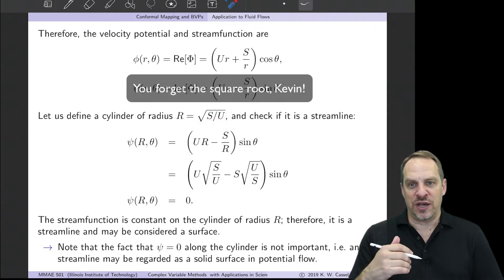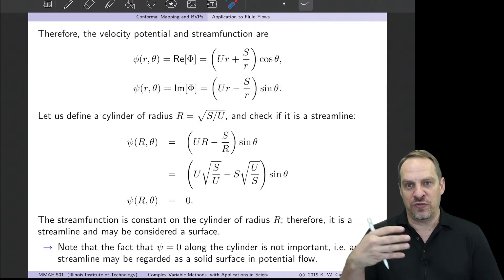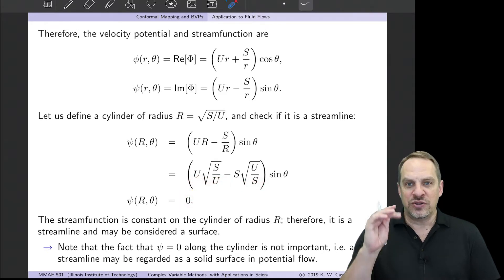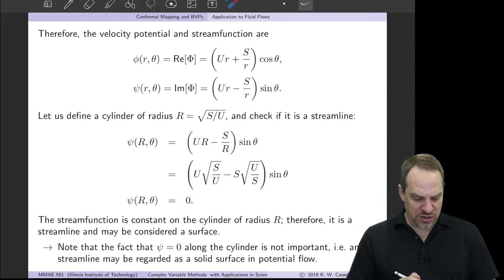So we have U times √(S/U) minus S times √(U/S), because it's 1 over R. Well, the square root of U cancels here, the square root of S cancels here, and you have √(S·U) minus √(S·U). That's just equal to zero. So on a circular cylinder of radius R, which equals √(S/U), the stream function ψ equals zero. Now it's actually not important that the value be zero, it just has to be a constant. It happens to be zero in this case, but that's immaterial.